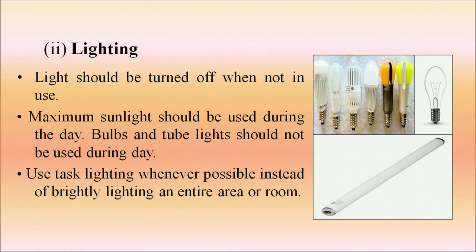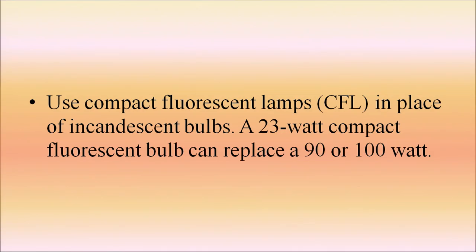For lighting: turn off lights when not in use, and maximize use of sunlight during the day — do not use bulbs or tube lights when there is adequate daylight. Use task lighting instead of brightly lighting an entire room. Use compact fluorescent lamps (CFLs) in place of incandescent or tungsten bulbs — a 23-watt CFL can replace a 90–100 watt bulb. Use dim lights in galleries, lobbies and balconies. Do not keep computers, TVs or music systems in standby mode; turning off the TV instead of standby can save 70 kilowatt-hours per year.